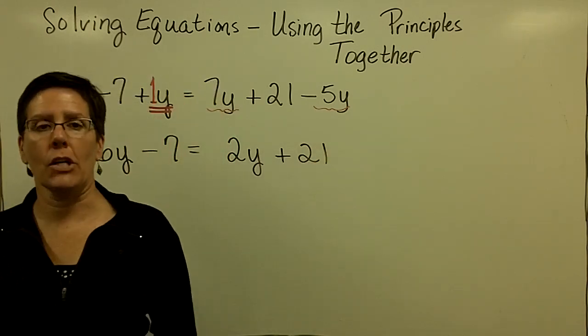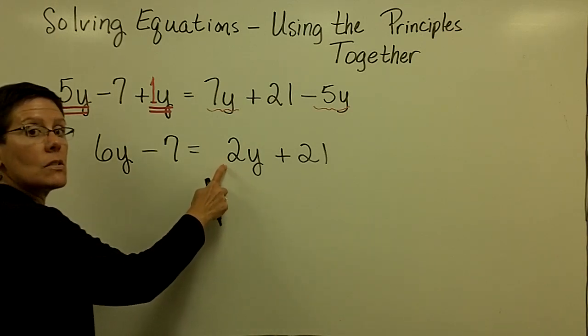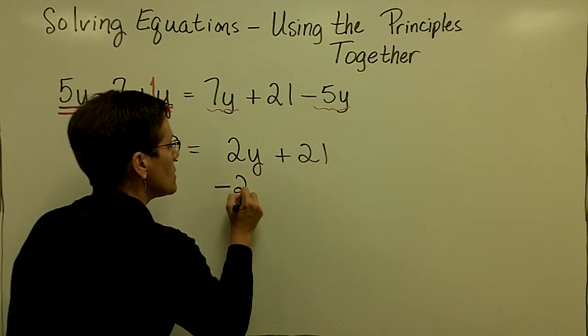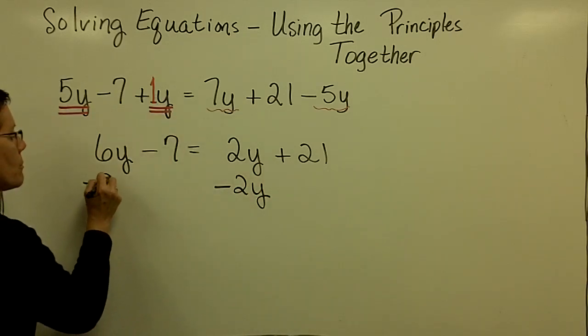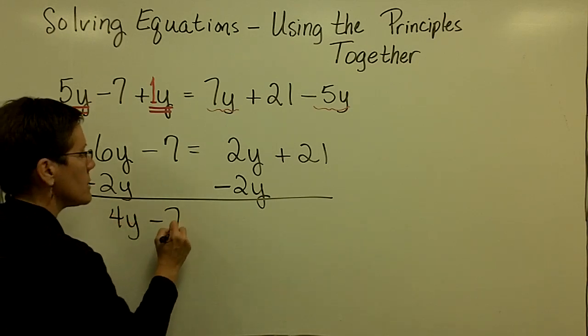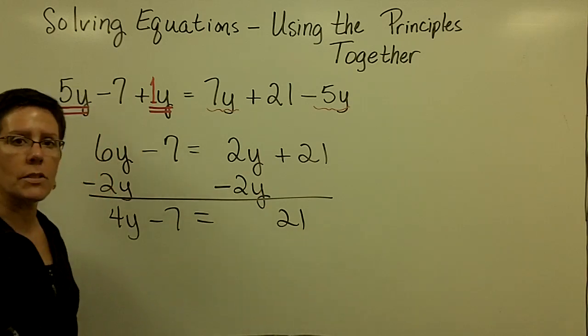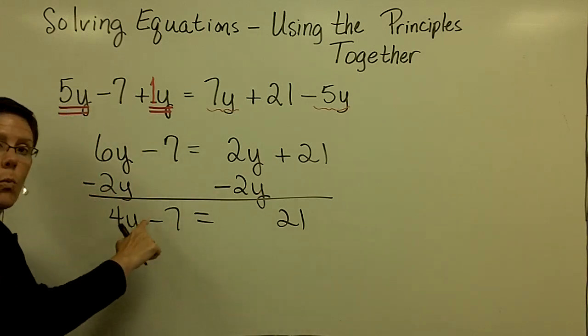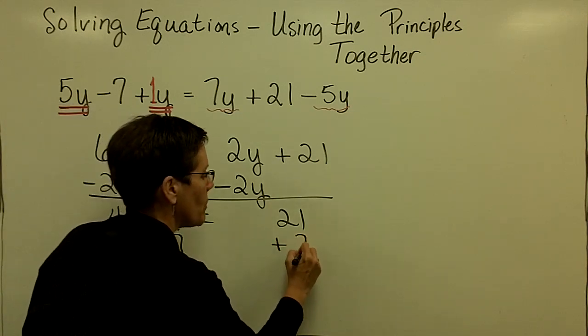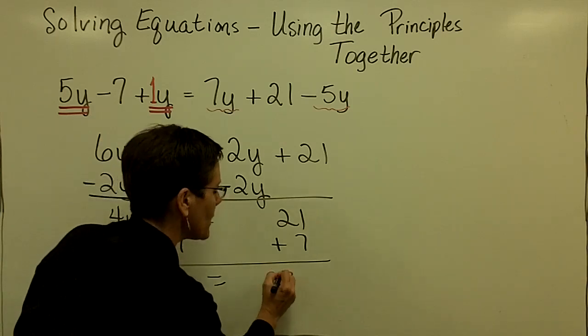Now I'm ready to go ahead and use the addition principle and focus on the variable terms. This one has the smaller coefficient over that one, so I'm going to choose to subtract 2y from both sides. And so here I'll have 4y minus 7 equals 21 because those added to be 0. I want to get the y term alone, so I'm going to add 7 to both sides of the equation.